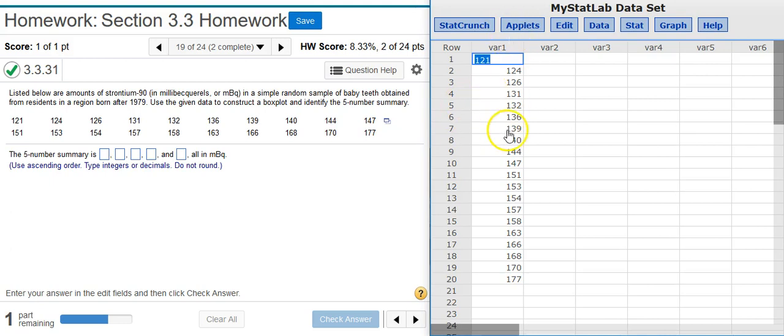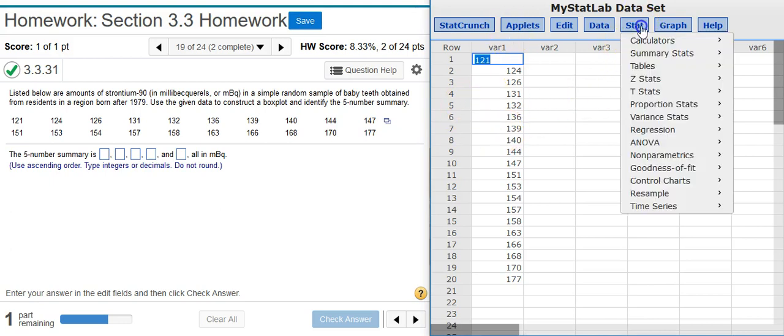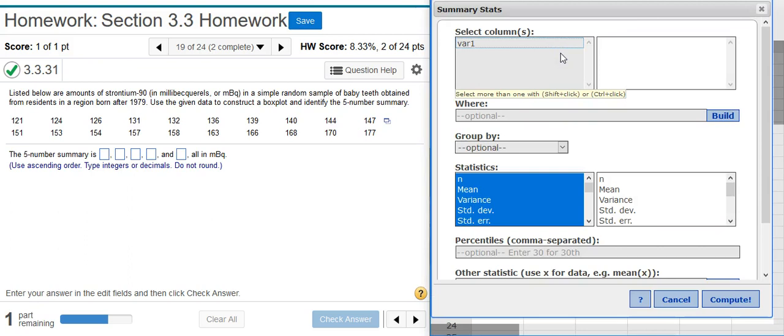Great. Now to get the five-number summary I'm going to go into Stat, Summary Stats, Columns because I'm looking for summary statistics on data that is listed in a column. Select the column where my data is located and then I come down here and select the specific statistics for the five-number summary. To do that on an individual basis I'm going to use the control-click option, so I press the control button on my keyboard and then with the left button on my mouse I'm going to click the individual statistics I want for my five-number summary.